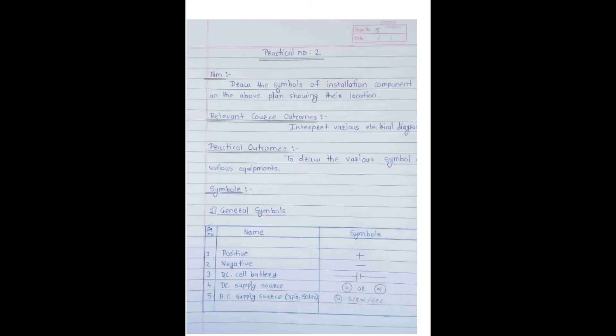Relevant course outcomes, practical outcomes, and symbols. General symbols are positive, negative, DC cell, battery, this is supply source.